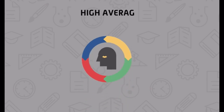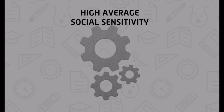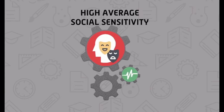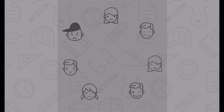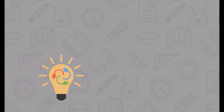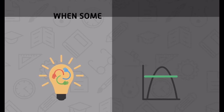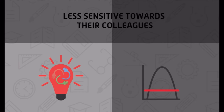The second behavior was high average social sensitivity. Team members were skilled at reading how others felt based on tone of voice, expressions, and other non-verbal cues. One of the easiest ways to determine social sensitivity is to show someone photos of a person's eyes and ask them to describe what that person is feeling. People on successful teams scored above average — they seemed to know when someone was feeling upset or left out. On the contrast, people on less effective teams scored below average; they were less sensitive towards their colleagues.